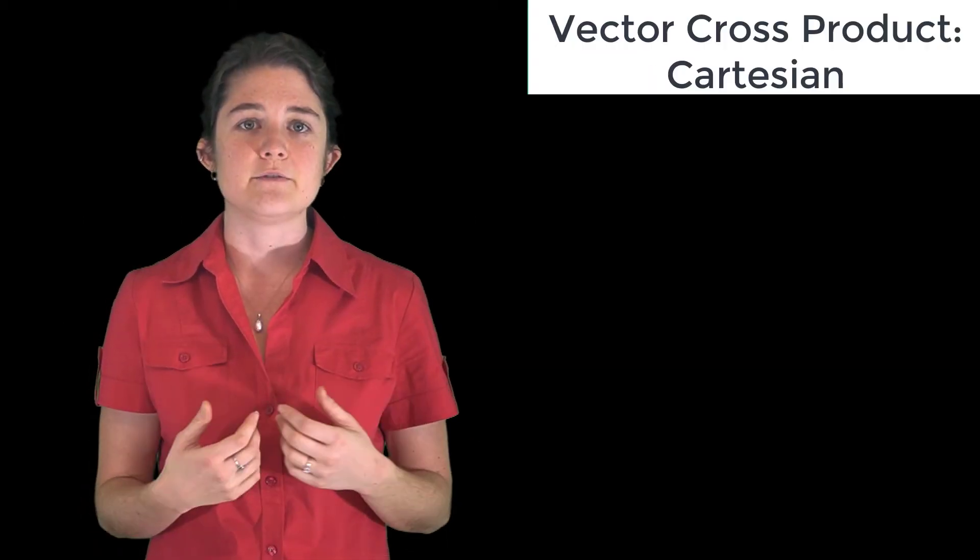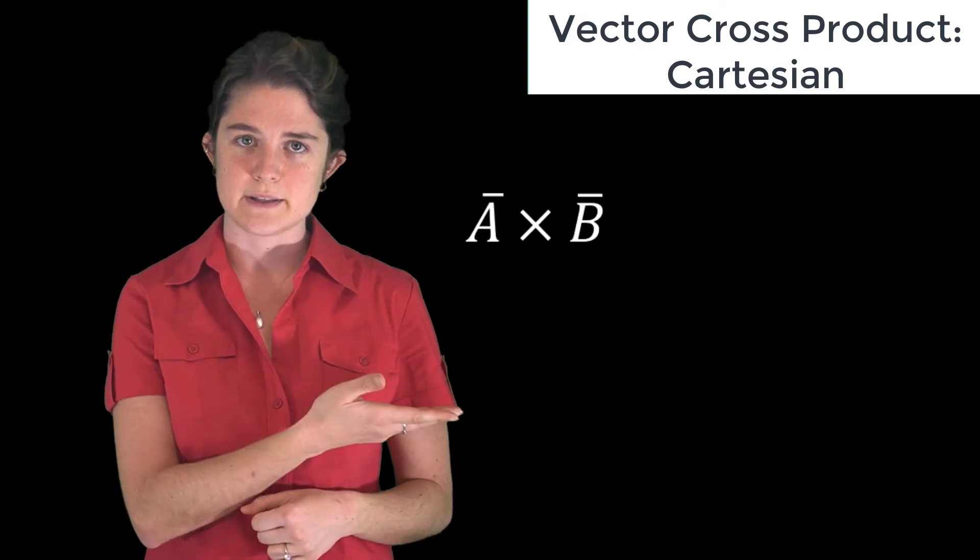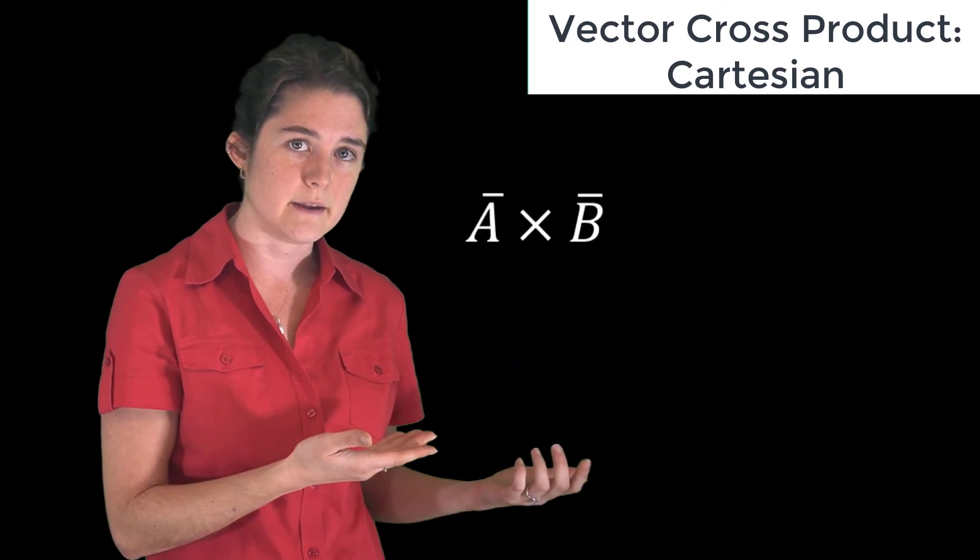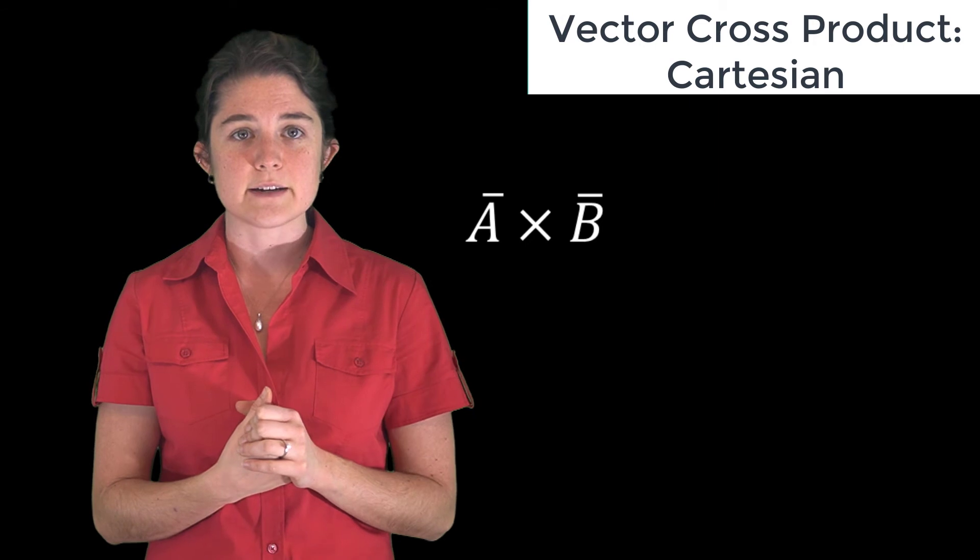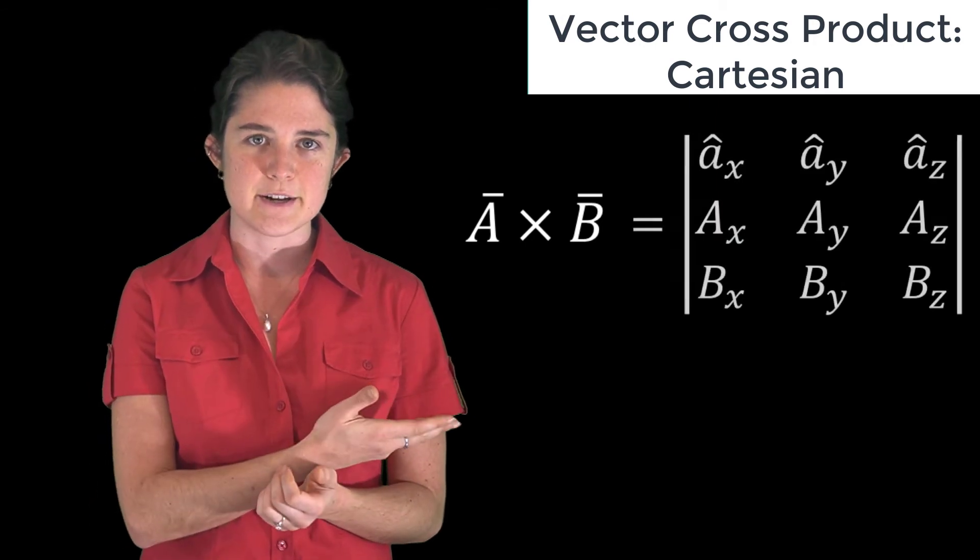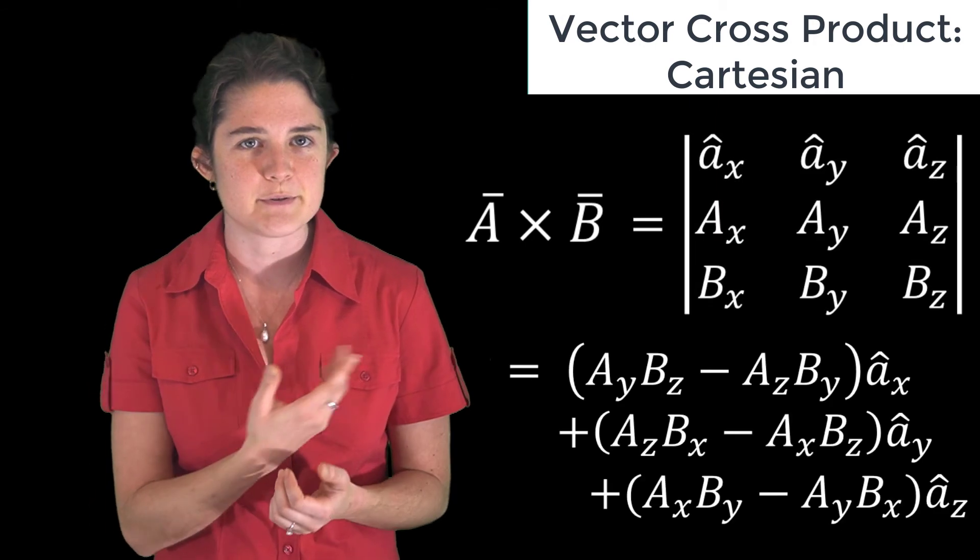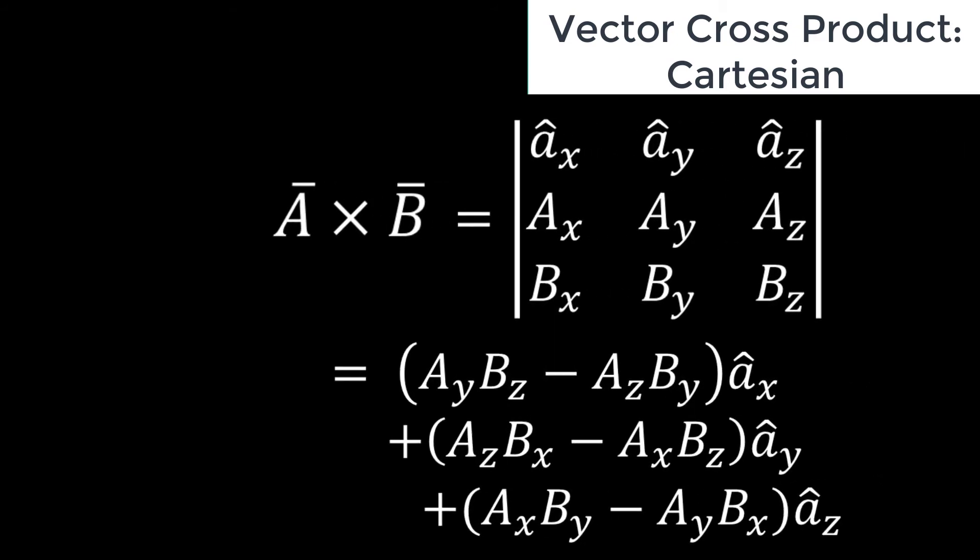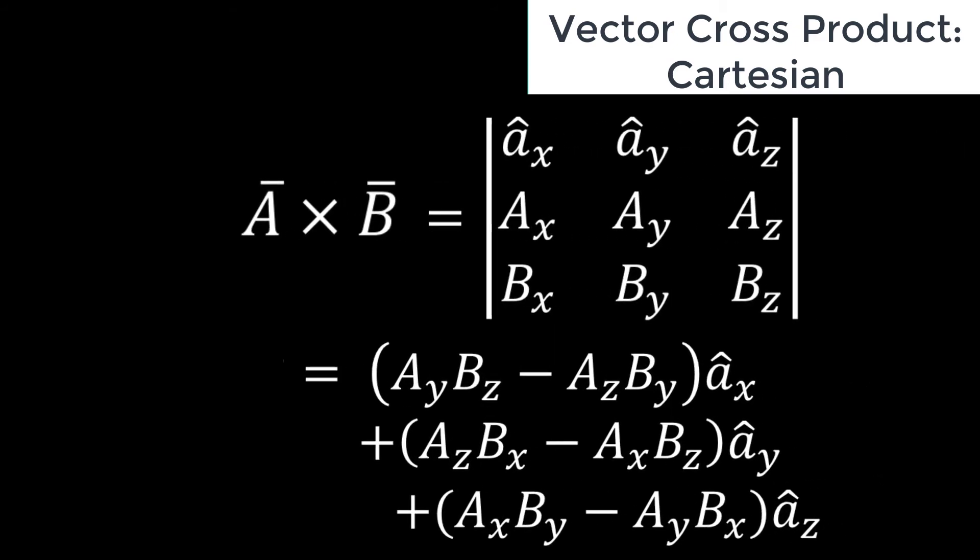The other option for multiplication of two vectors is a cross product, which is written like this: a cross b. The cross product of two vectors a and b is equal to the determinant of this matrix, which can also be written like this. It's important to note that the cross product of two vectors is still a vector.